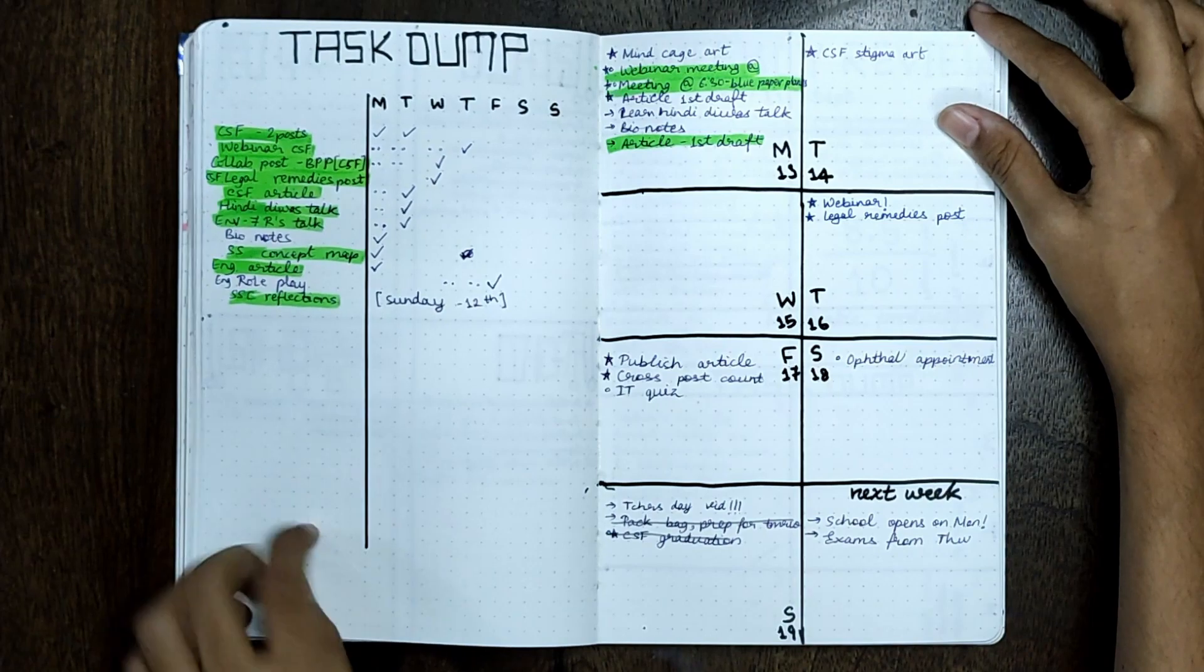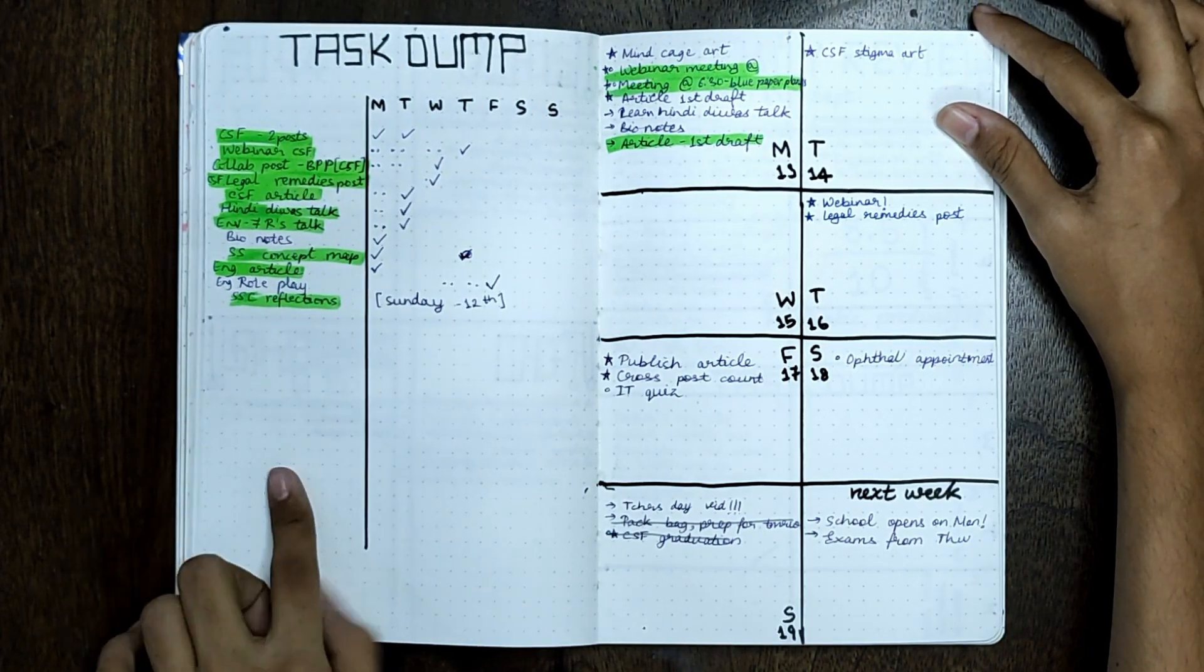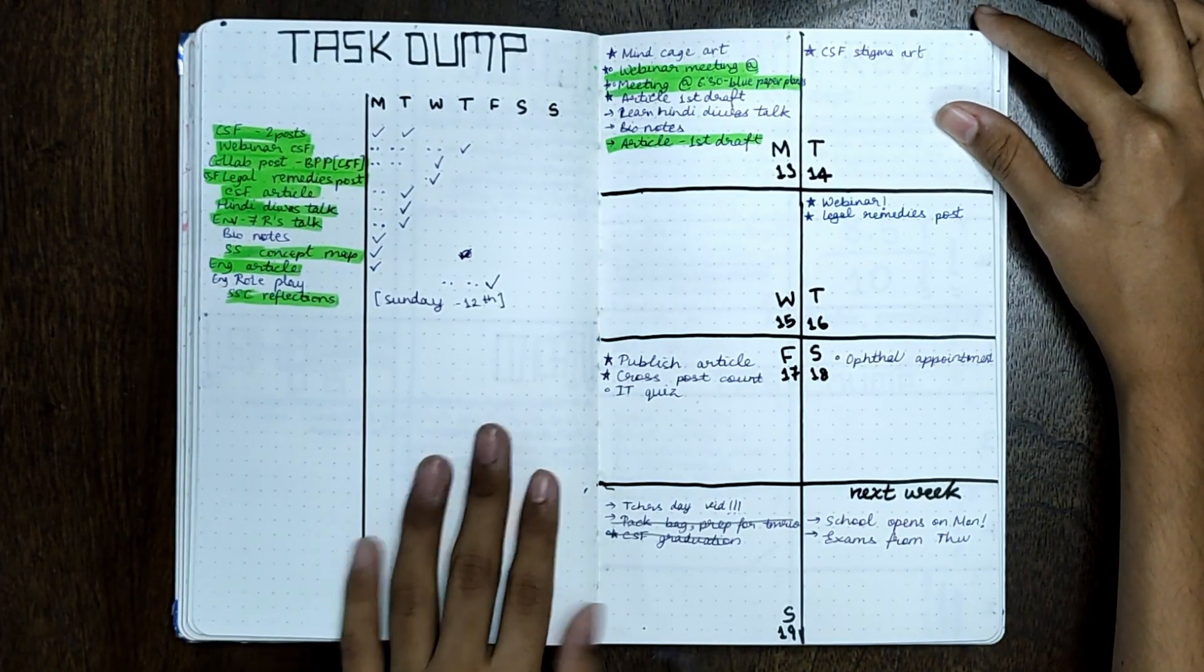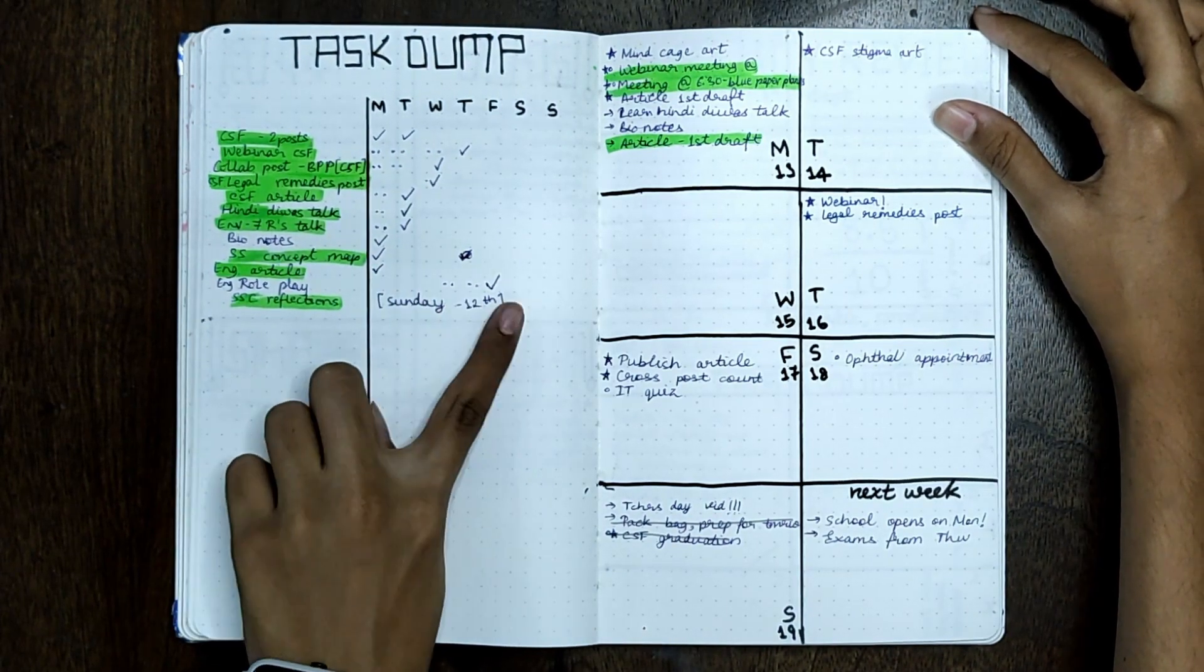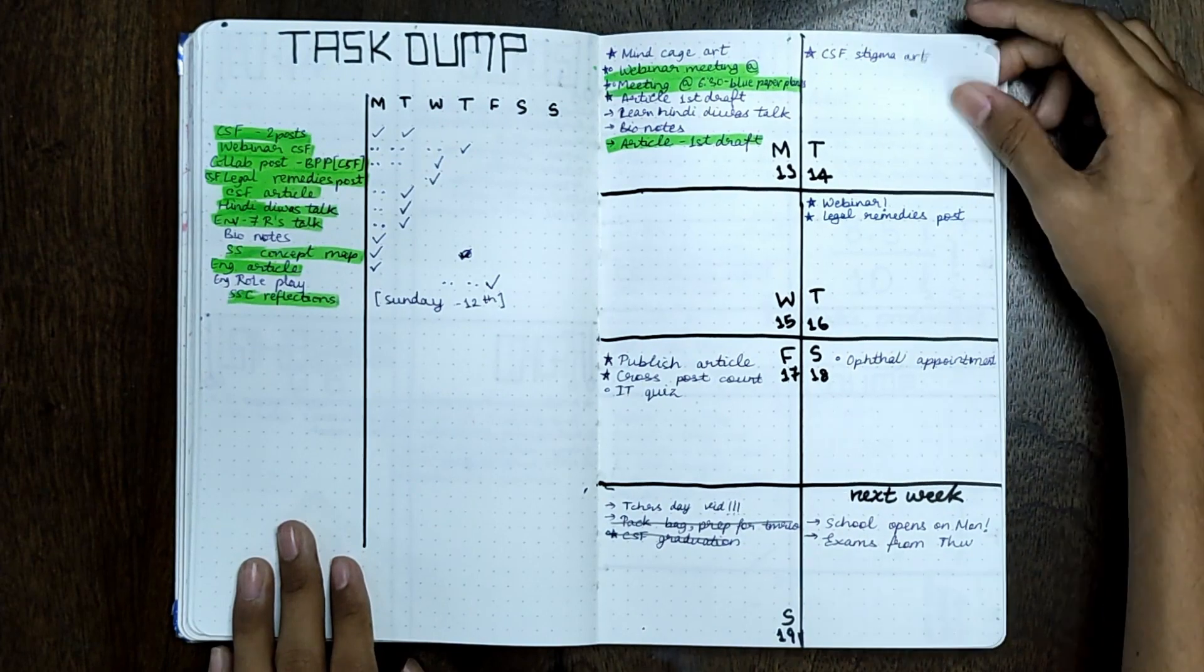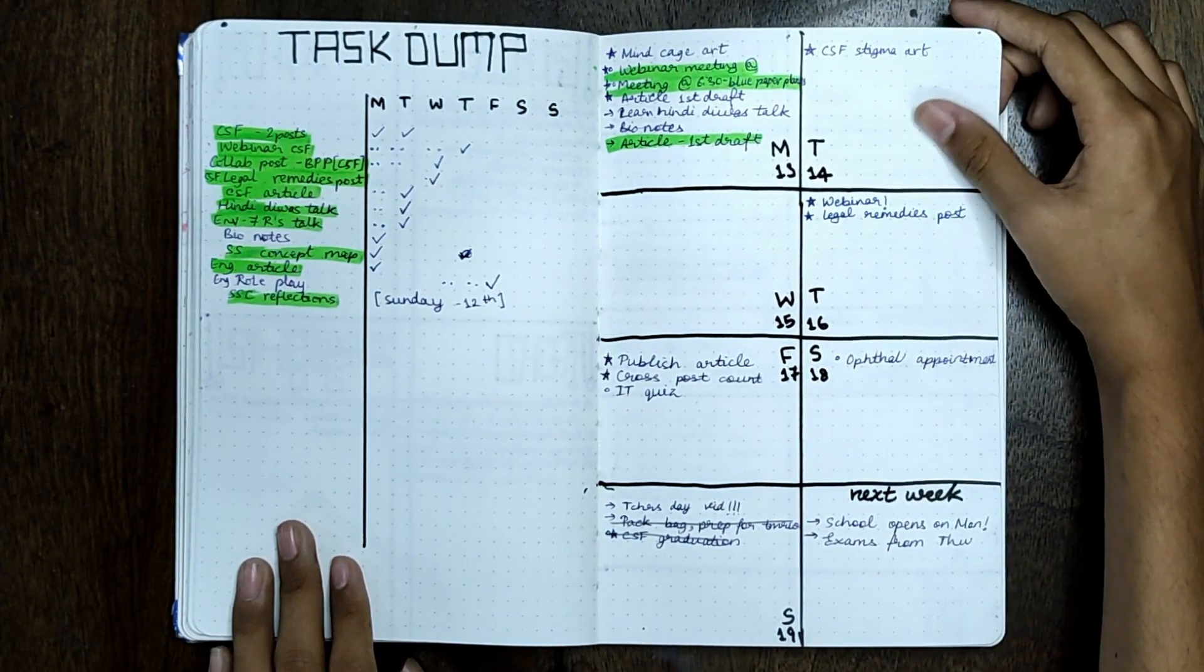Next I have a few to-do lists for the first week of September. Moving on, I have a task dump when I had a really busy week, so I just dumped all the tasks and marked the dates that I had to complete them and then checked them off accordingly. On the right, I have to-do lists for that week again.